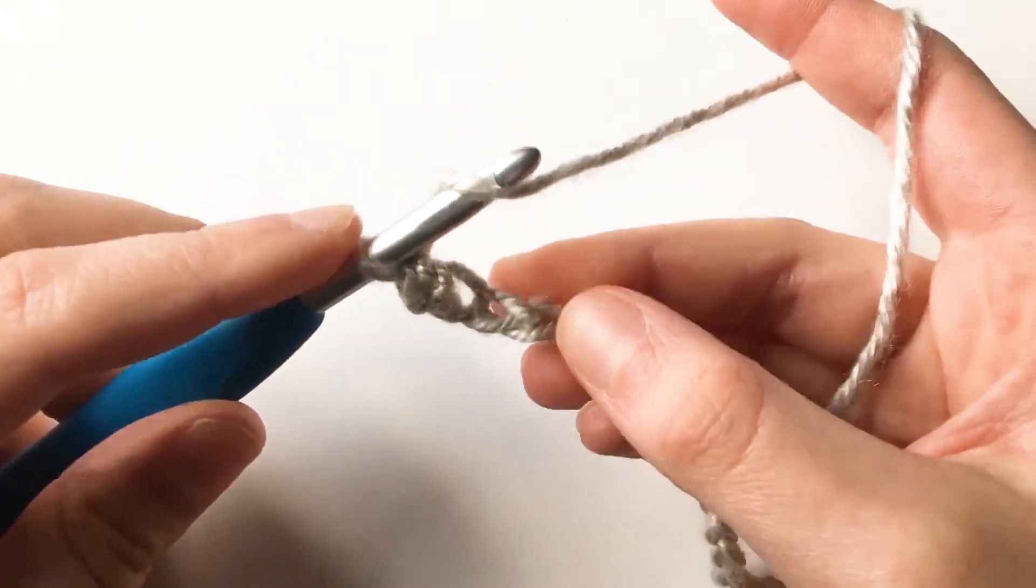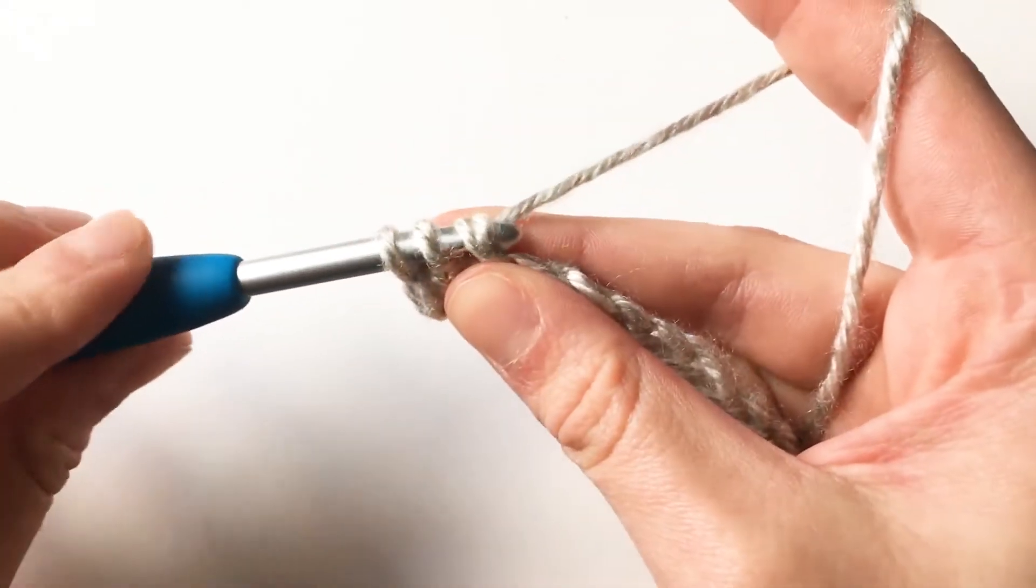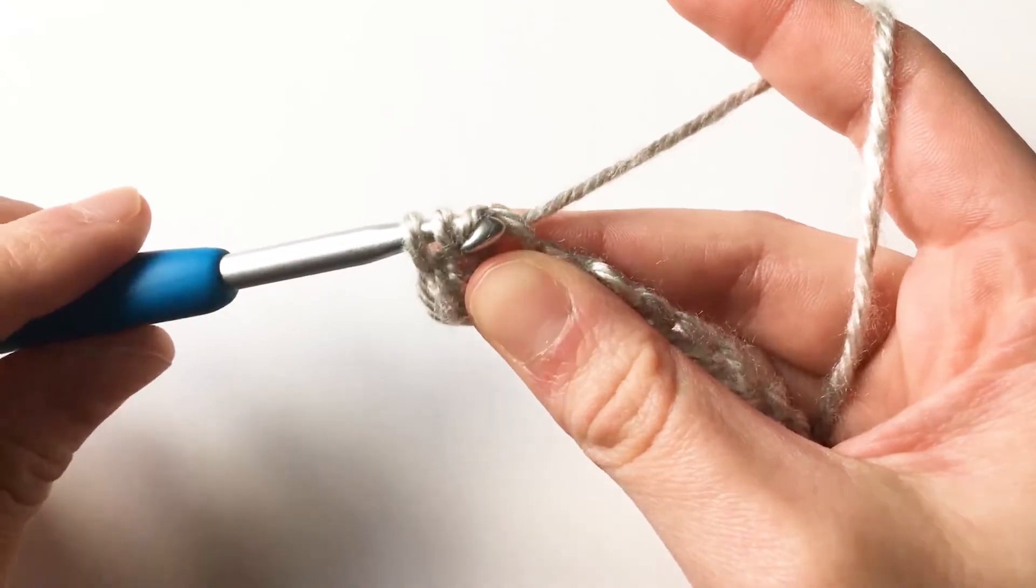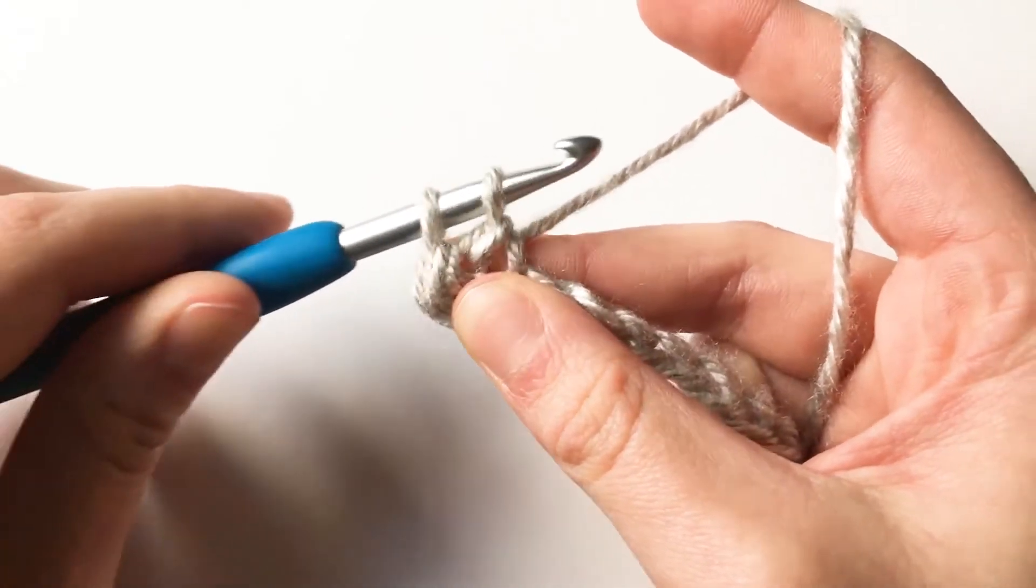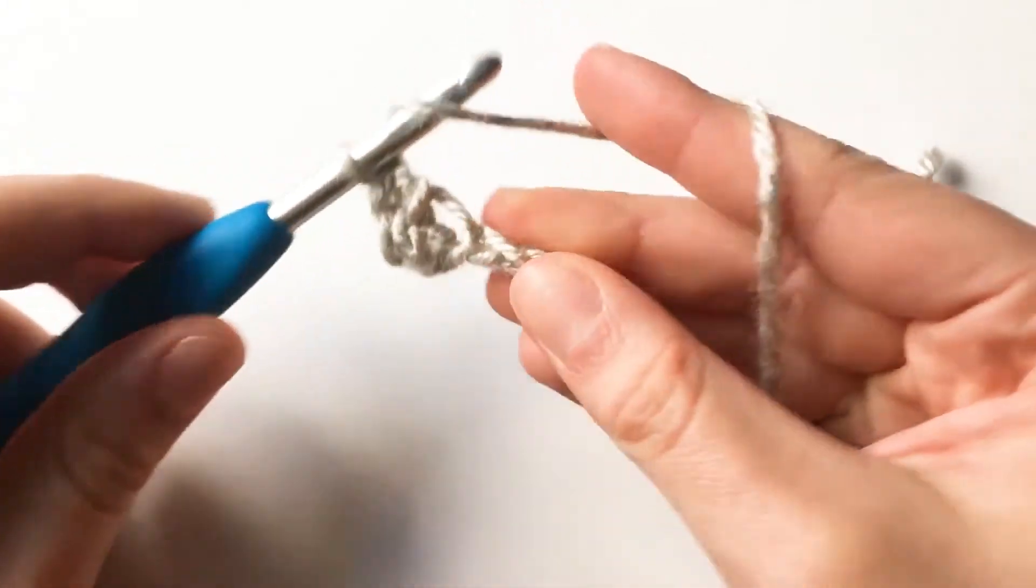You're going to do the exact same thing in the next stitch. So yarn over, insert your hook, yarn over, pull back through the stitch and the next loop on your hook. Two loops on your hook, yarn over, pull through the last two loops.